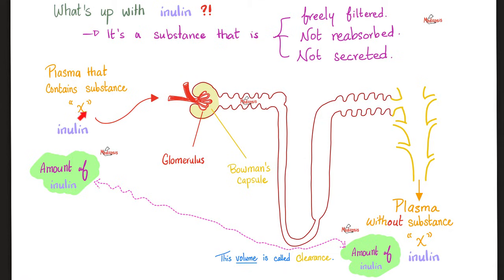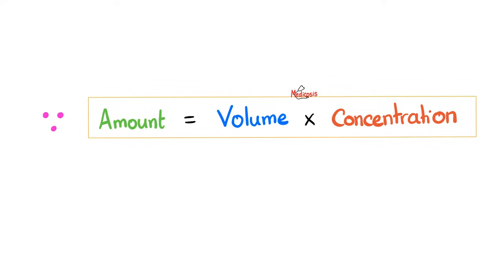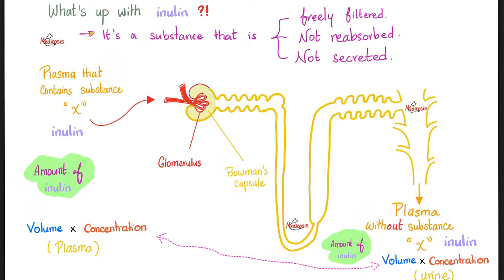I will give you inulin, which is foreign to your body. Your body cannot make it and cannot metabolize it. So the amount of inulin I give you in your vein is the same amount that leaves in your urine. From the Fick principle, we know that amount equals volume times concentration. Since the amount in equals the amount out, volume times concentration here equals volume times concentration here.